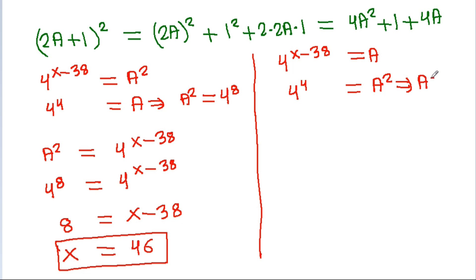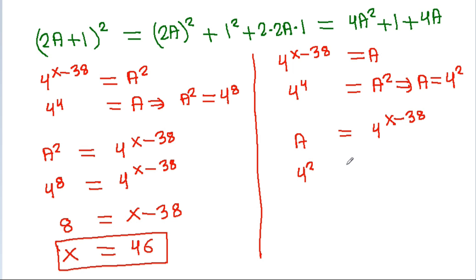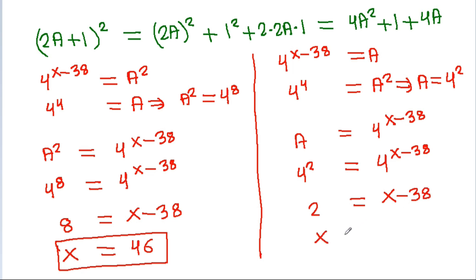From here we can get a is equal to 4 power x minus 38, and a is 4 power 2, so 2 will be equal to x minus 38, and x will be equal to 40.